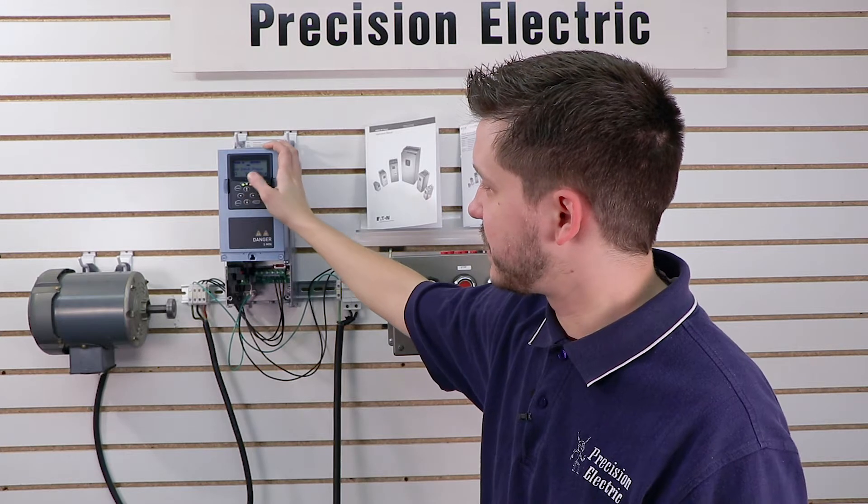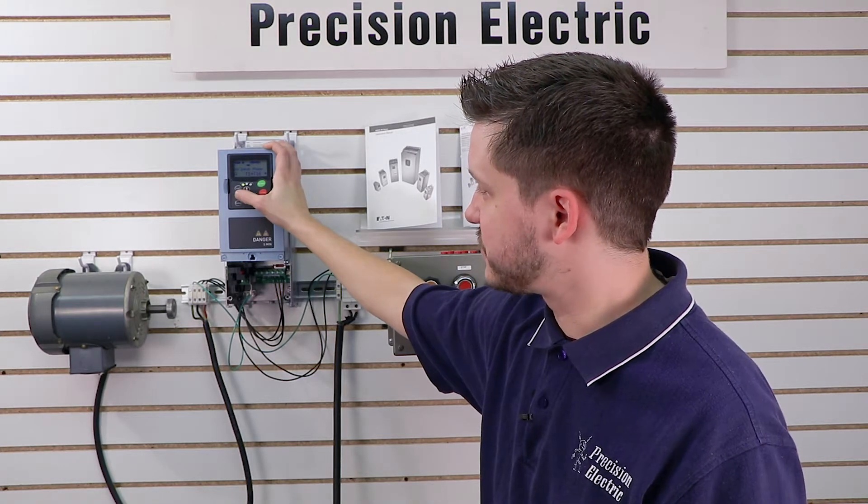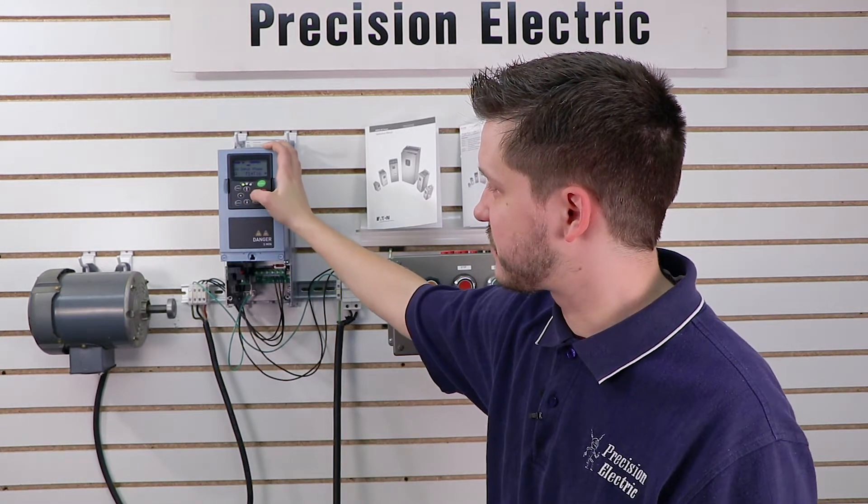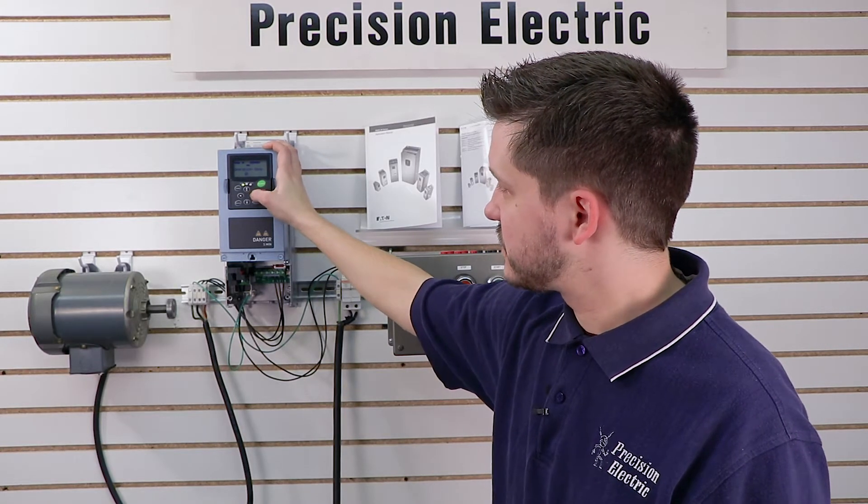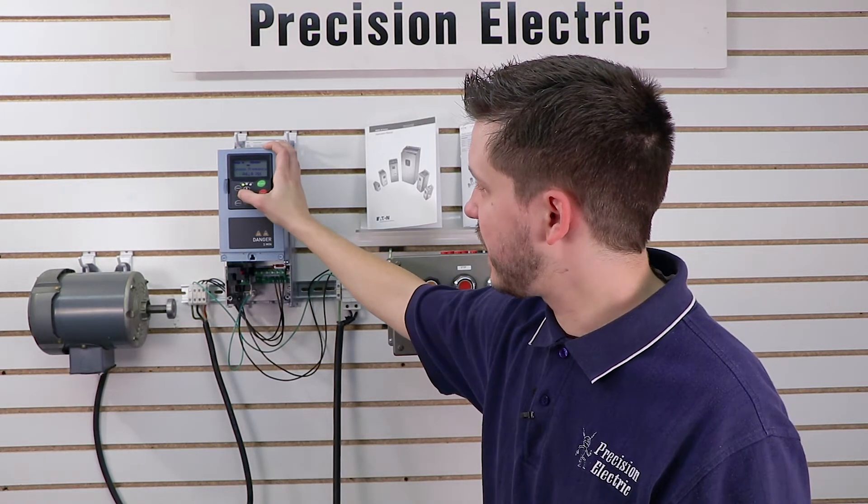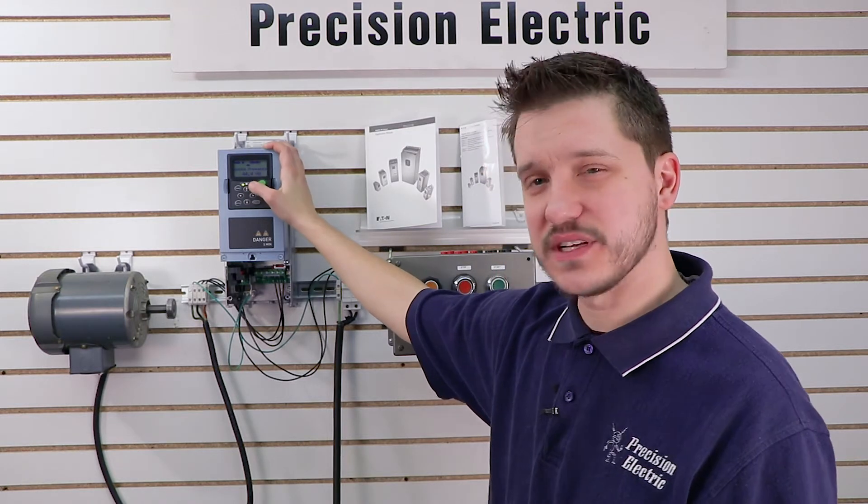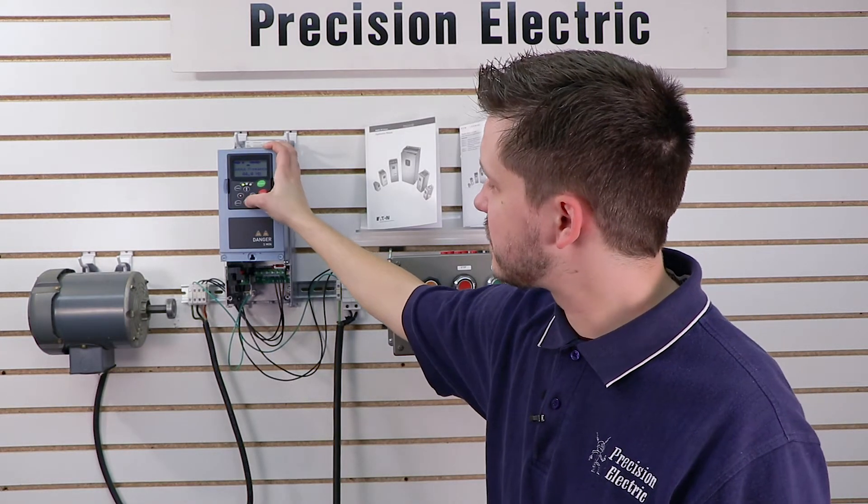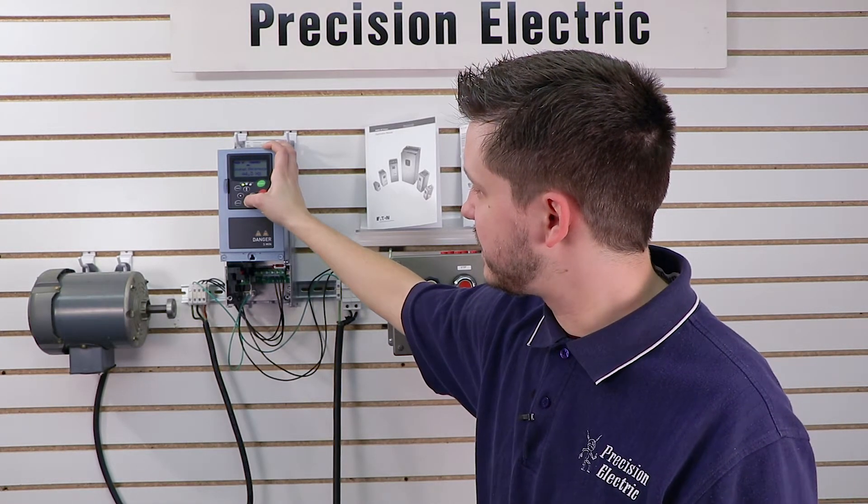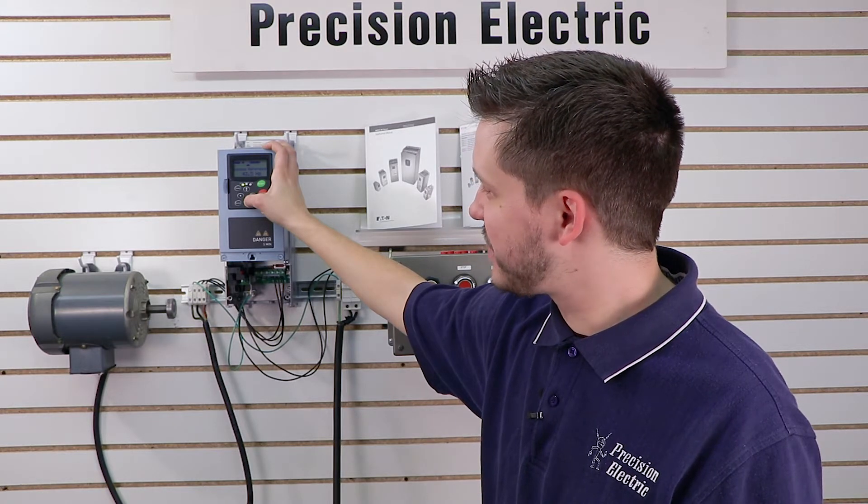But right now I'm not in the right menu. I actually have to use these left and right arrow keys first to get to my output frequency. Right now it's set to 44.4 hertz. So if I press the down key, it'll switch to keypad reference. And you'll notice the numbers start to go down.